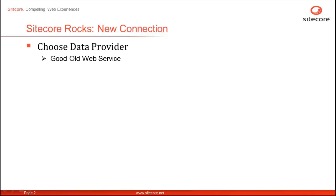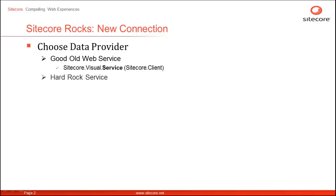The good old service is the default web service available in Sitecore since version 6.0. It is named as 'service' and lives in Sitecore.client assembly at the Sitecore.visual namespace. You may use the good old web service in your API calls in a production environment.